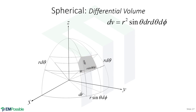Last, we have our differential volume, which is the product of the lengths of all three sides: r d-theta, dr, and r sine theta d-phi. Multiplying all that together gives r squared sine theta dr d-theta d-phi. That is our differential volume in spherical coordinates.